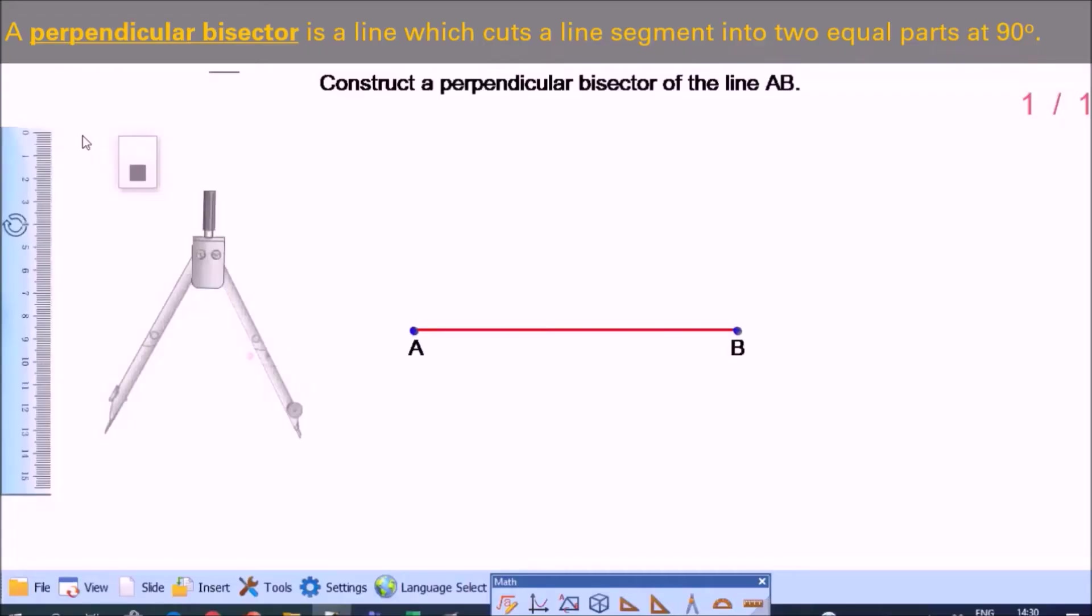Draw the perpendicular bisector of the line AB. So here is the given line segment AB. First, place the compass point on A.